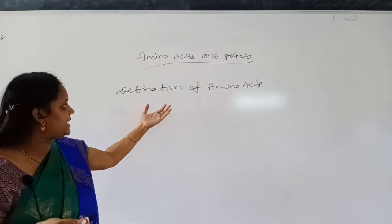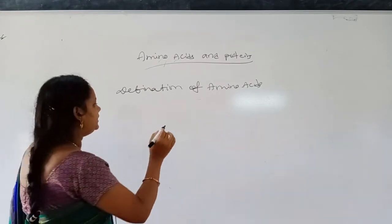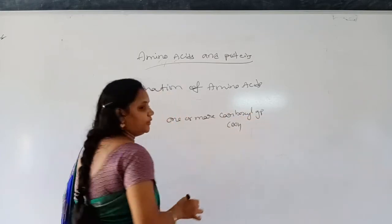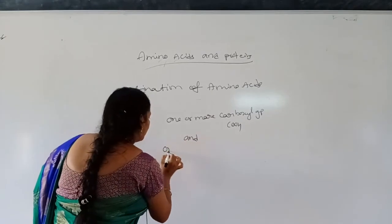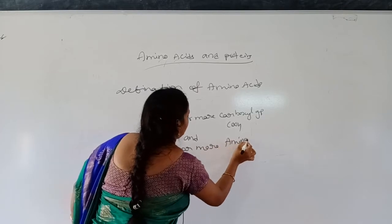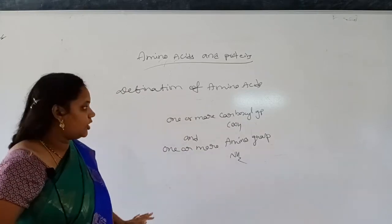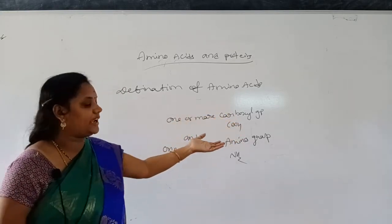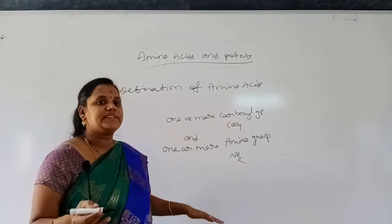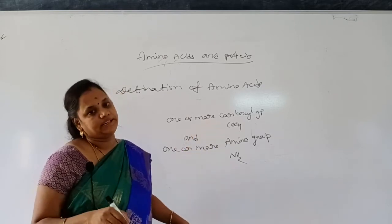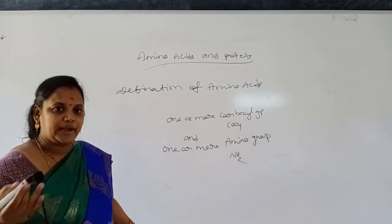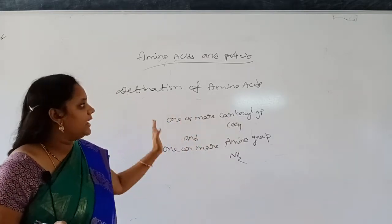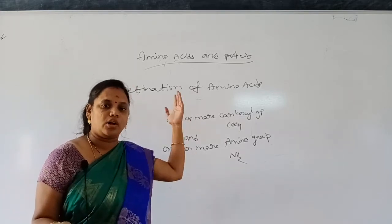Definition of amino acids: amino acids are the organic compounds which contain one or more carboxyl group — that is COOH group — and one or more amino group, that is NH2 group. So amino acids are the compounds which contain both amino group and acid group. The organic compounds which contain one or more carboxyl group and one or more amino group are called amino acids.